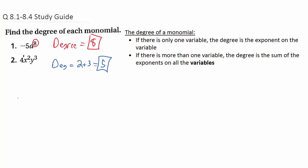Let's look at the number 2 as an example. Technically there's no variable, but you can write it as 2 times x to the 0, since x⁰ equals 1. You can check on a calculator: raise any number except 0 to the 0th power and you get 1. So any constant term in a polynomial has a degree of 0.